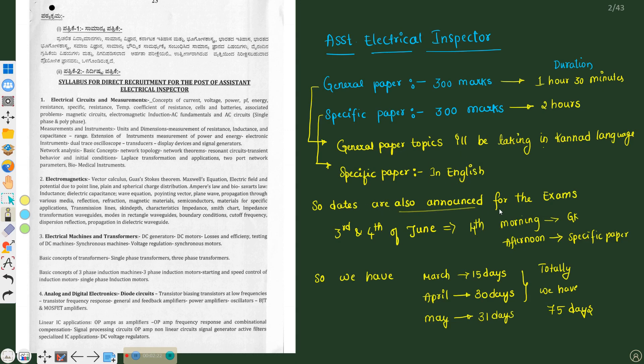Dates are also announced for the exams. We know that 3rd and 4th - 3rd is the compulsory Kannada exam, 4th June is the main exam, that is General Paper 1 and Specific Paper 2. Morning we have general paper, in afternoon we have specific paper, so totally we have 3 hours 30 minutes. So we have 75 days if we consider from March 16th, April 30 days and May 31 days. This time is very sufficient to get good marks in Assistant Electrical Inspector.